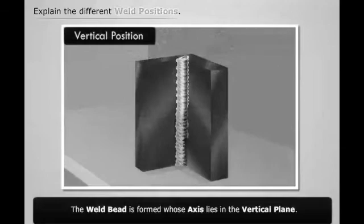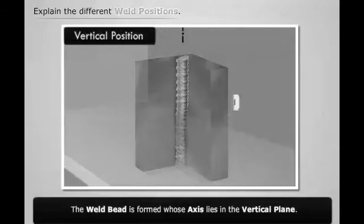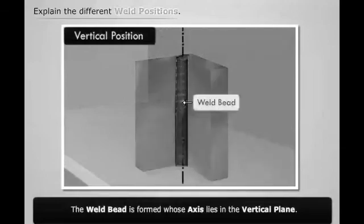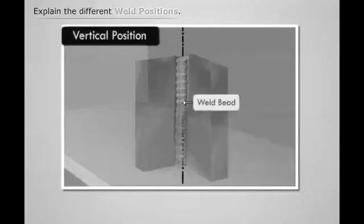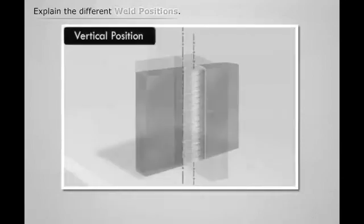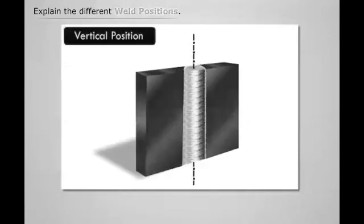After the welding process is over, we see that the weld bead is formed whose axis lies in the vertical plane. Thus we have a weld bead whose alignment is vertical.